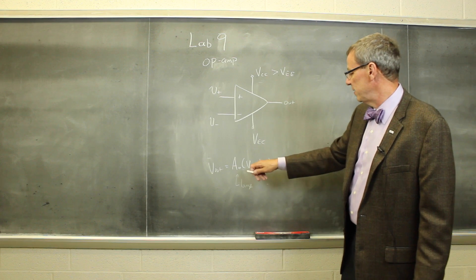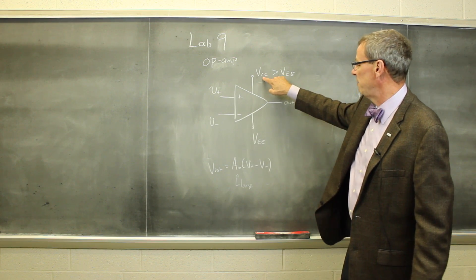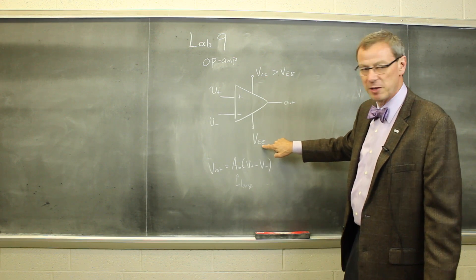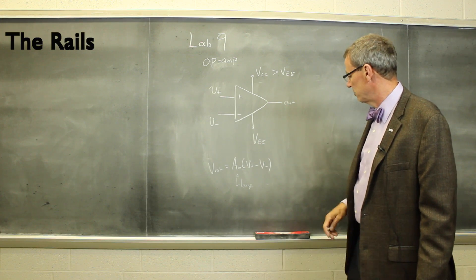It's limited that this output voltage can never exceed VCC, and it can never get smaller than VEE. Those are known as the rails, so it's trapped between those.